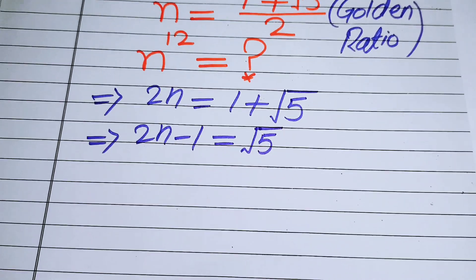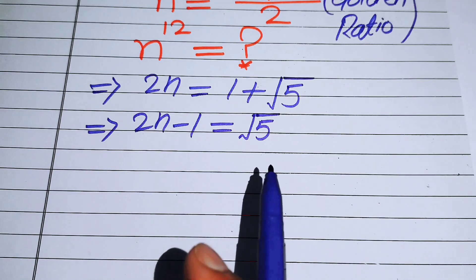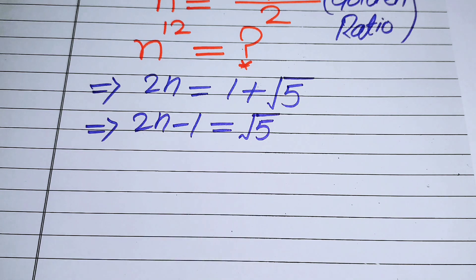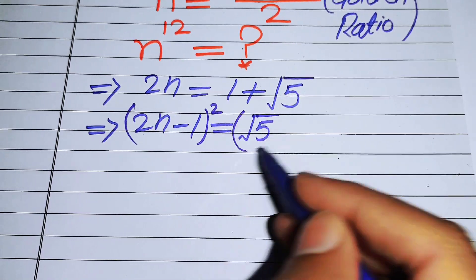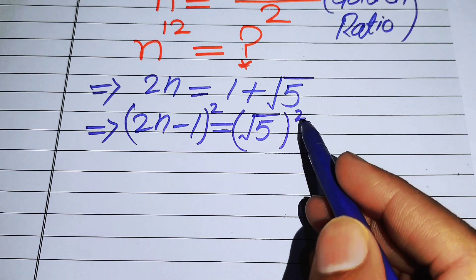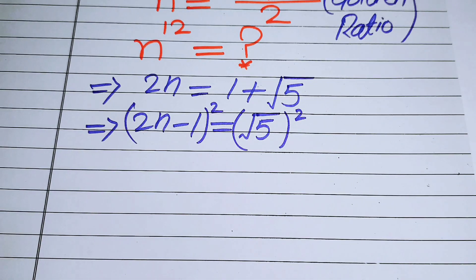We get 2n minus 1 equals √5. To remove the square root, we square both sides. The right-hand side simplifies to 5, and the left-hand side is expanded using the identity (a - b)².